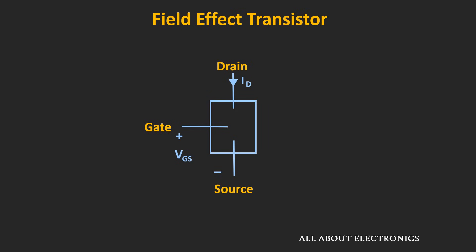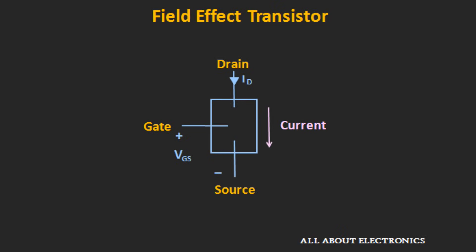The three terminals of the FET are known as gate, drain, and source. In FET, the current flows between the drain and the source terminal, and this current can be controlled by applying the voltage between the gate and the source terminal.